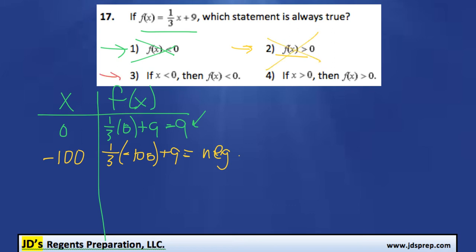Now let's look at option 3. It says that if x < 0, then f(x) < 0 as well. To disprove that, we'll try to find a negative x value that gives a positive f(x). Let's try something close to 0, like negative 1. If we do 1/3 of negative 1 plus 9, we get a positive number. So this is also not necessarily always true.